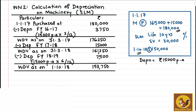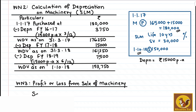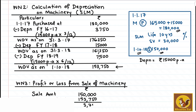We need this WDV to find profit or loss from the sale of the asset. The sale amount is rupees 1,50,000. We reduce the WDV as on the date of sale — 1st October 2018 — which is 1,53,750. The sale amount is less than the WDV, meaning we received less than the book value. So there is a loss on sale of asset of 3,750. All the amounts are now ready, and from working notes 2 and 3 it will be easy to do our posting.